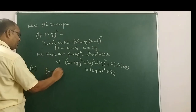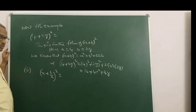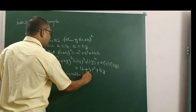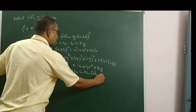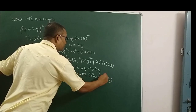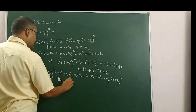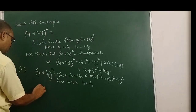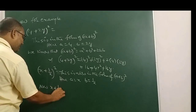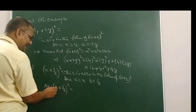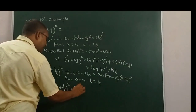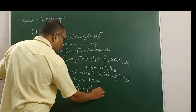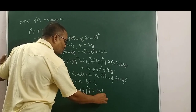Second example: X plus 1 by X whole square. This is also in the form of A plus B whole square. Here, A is equal to X and B is equal to 1 by X. Now, X plus 1 by X whole square equals A square, that is X whole square, plus B square, that is 1 by X whole square, plus 2AB, that is 2 into X into 1 by X.